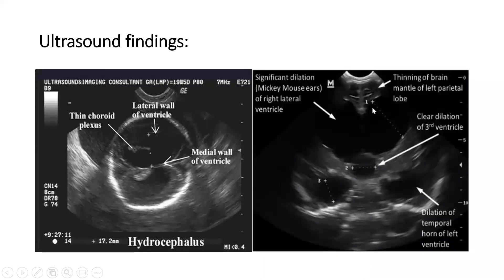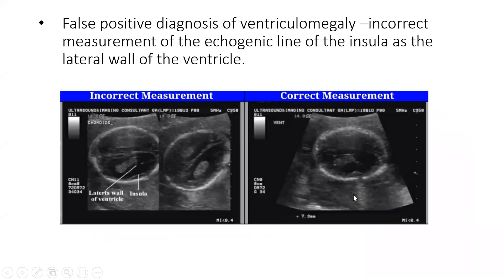In transcranial infant ultrasound, there is a Mickey Mouse sign with dilatation of lateral ventricles and obvious dilatation of the third ventricle. A false positive diagnosis can occur from incorrect measurement of the echogenic line of the insula as the lateral wall of the ventricle.